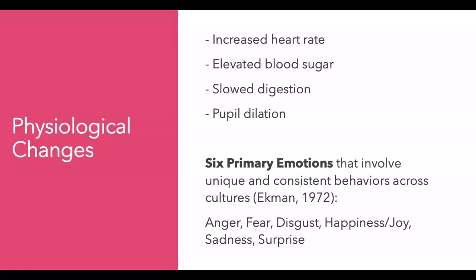Regarding physiological changes, these will involve increased heart rate, elevated blood sugar, slowed digestion, as well as pupil dilation. So it is not a surprise that when you are so stressed, you will have elevated blood sugar. Or when you are so angry, you will see it in how your pupils dilate.